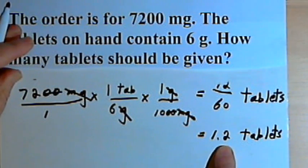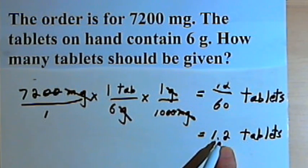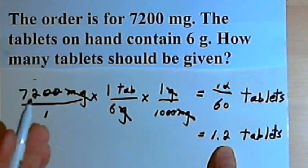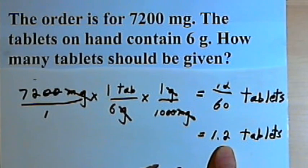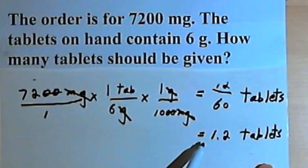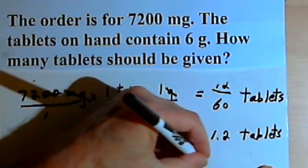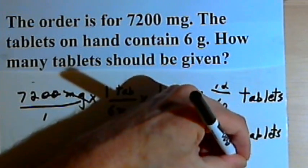Now, since the decimal part, 0.2, is less than 0.5, that's the cutoff point for whether I'm rounding up or down, I'm just going to round this amount down and I'm going to end up with 1 tablet as the dosage.